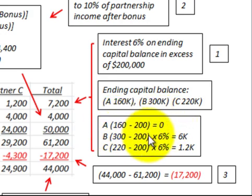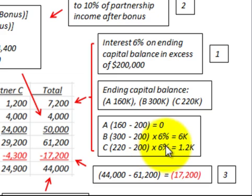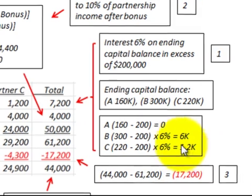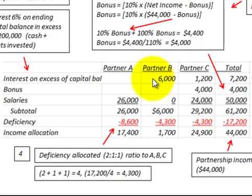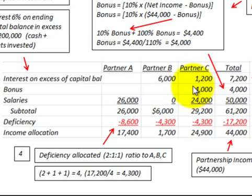Partner B had $300,000 less $200,000, giving a $100,000 excess times six percent, for $6,000. Partner C had $220,000 less $200,000, giving a $20,000 excess times six percent, for $1,200. So we allocate interest on the excess of capital: Partner B gets $6,000 and Partner C gets $1,200.